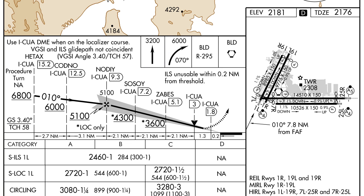Now, there may be other fixes in between these intersections; however, they do not have a significance on the profile of the approach. These symbols are only applicable for non-precision approaches and are depicted by a bold V.